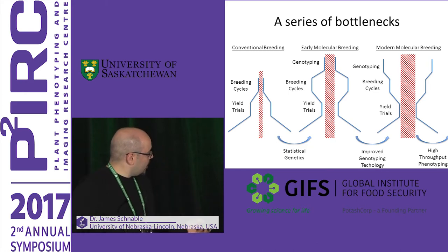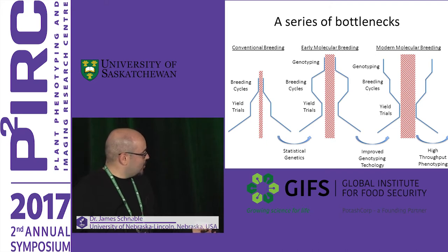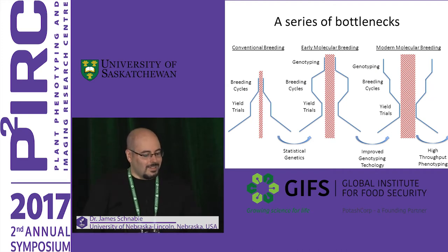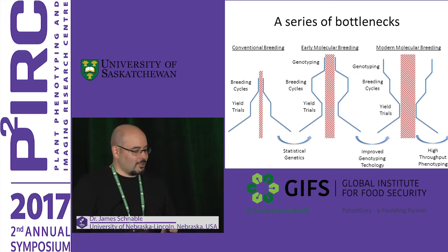Genotyping has decreased by about 200,000-fold the cost of generating genomic data about a line, whereas the cost of phenotyping for agronomic traits like yield has stayed essentially constant over that same period of time. Whenever you eliminate a bottleneck, you create a new bottleneck. Initially the bottleneck was breeding cycles; by going to molecular breeding techniques we eliminated that, but then it was genotyping. Now with improved genotyping technology, that bottleneck goes away, so the limitation is yield trials. That is why it's essential to invest in new technologies to evaluate lines faster and cheaper.